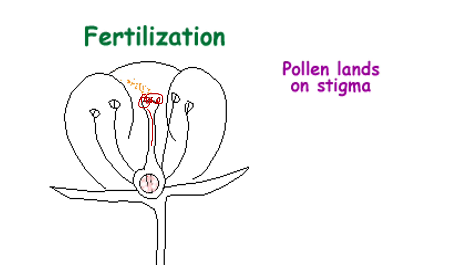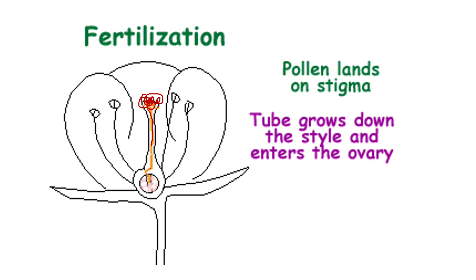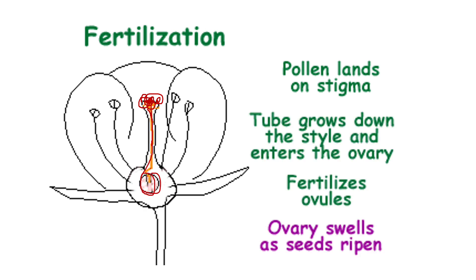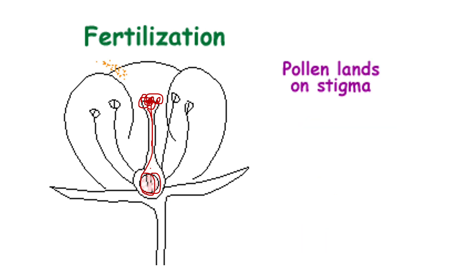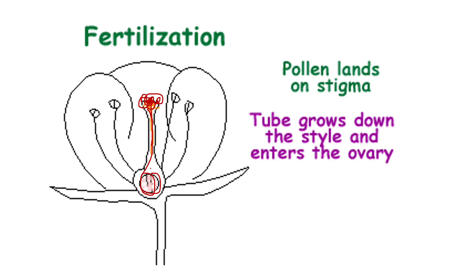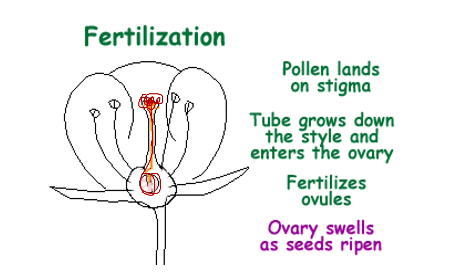Once the pollen tube reaches the ovary, the male cell from inside the pollen grain drops into the female ovary. The male sex cells — male gametes — meet with the female gamete, which is inside the ovary in the form of ovules. This process is called fertilization. Fertilization is the meeting or fusion of the male gamete and the female gamete inside the ovary.